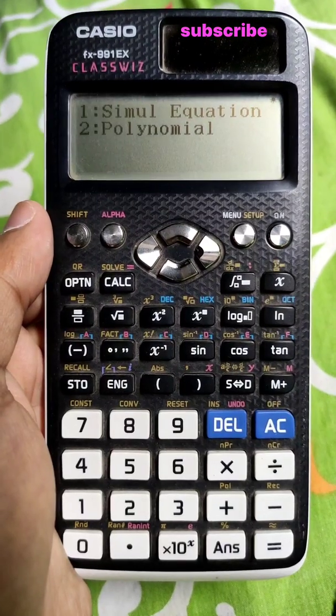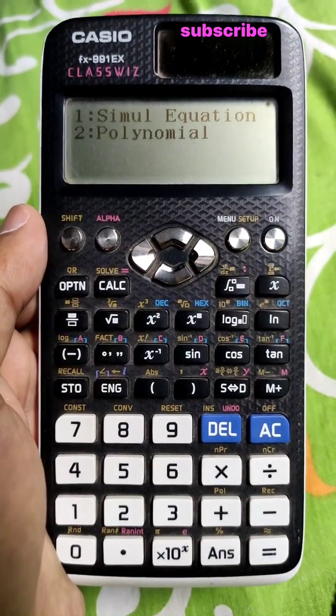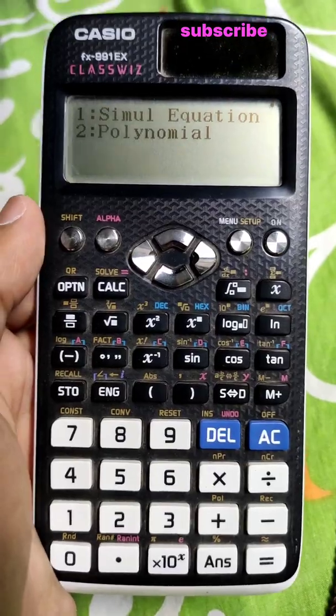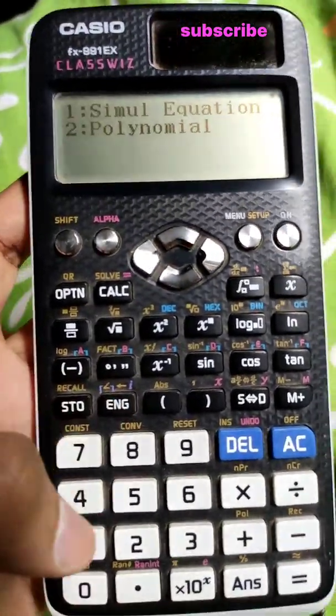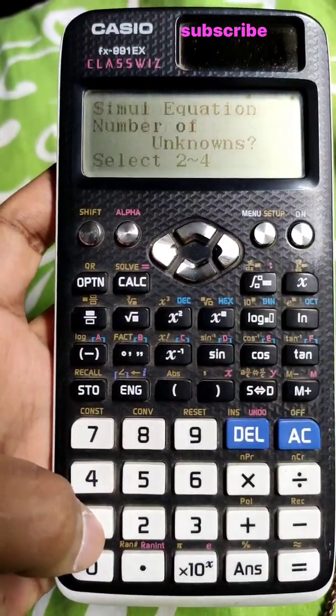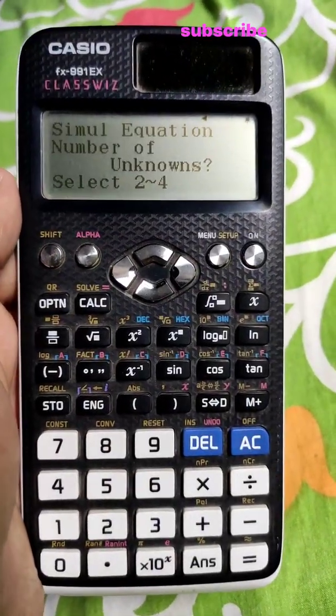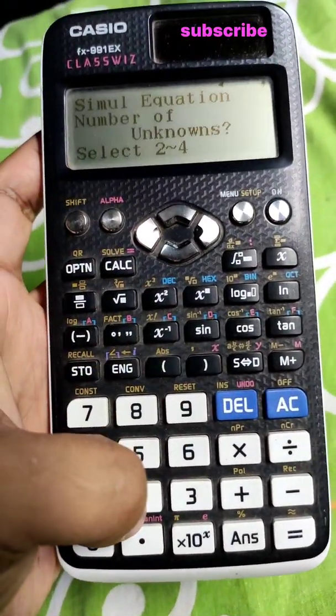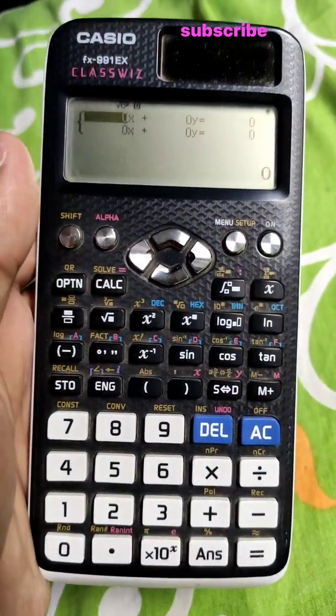Now for this video, we are going to solve simultaneous equation in two variables, so press 1 for simultaneous equation. For this video, we are going to solve for two variables, press 2. But you can do this for 3 and 4 variables as well. All you have to do is just press 3 or 4.